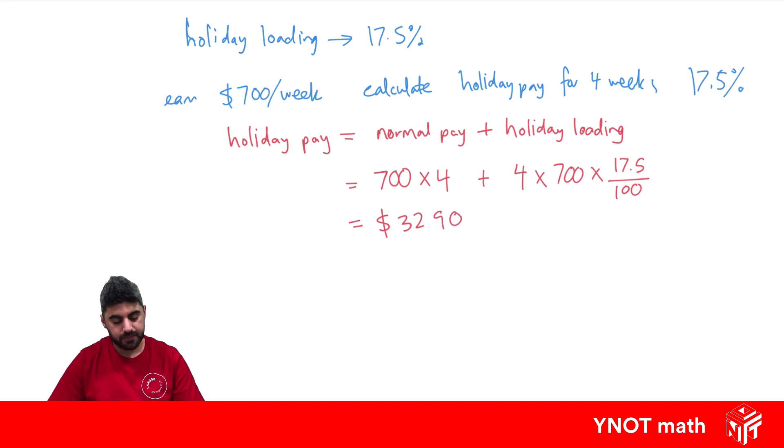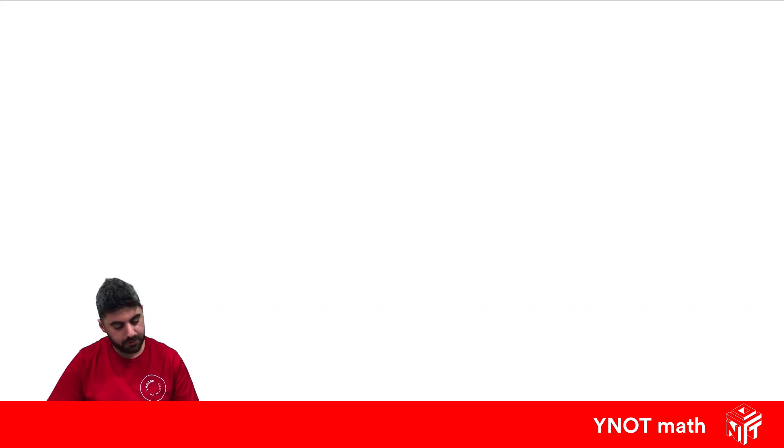Bear in mind that you'd normally make 700 times 4, which is $2,800, so you can see you make a bit extra in the holidays. Let's do one more example.